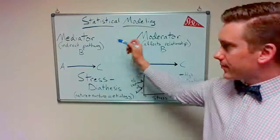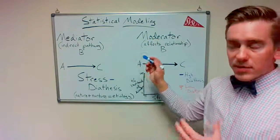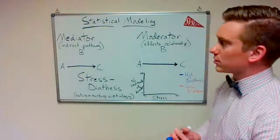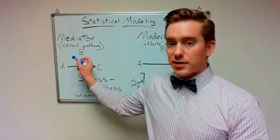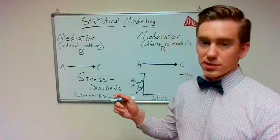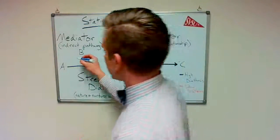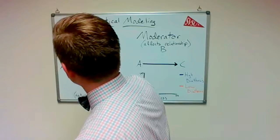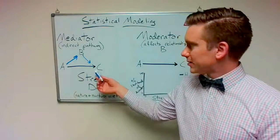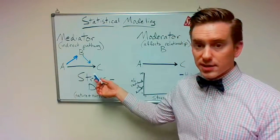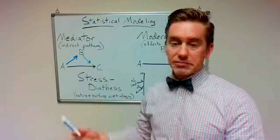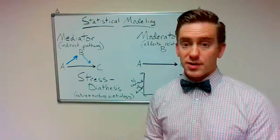A mediator, the thing to remember about this is that it represents an indirect pathway, or in other words, there is some third variable that is a middle step in the relationship between the other two variables. To graph it out with a picture, it would look something like this, where we have some variable A that's related to an outcome variable C, but in the middle we've got this variable B that is an important, intermediate, or indirect step in that process.